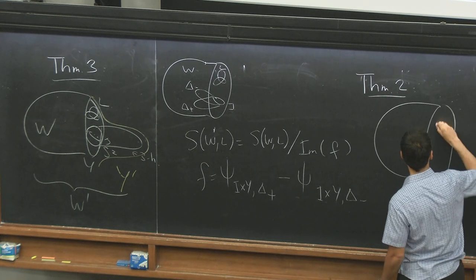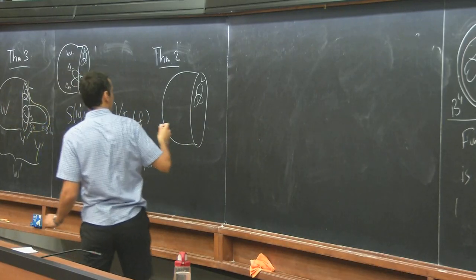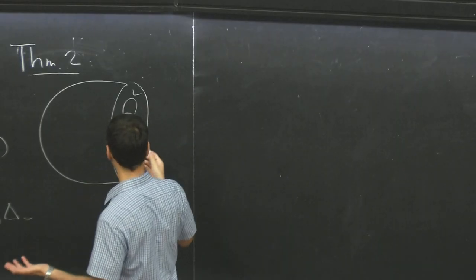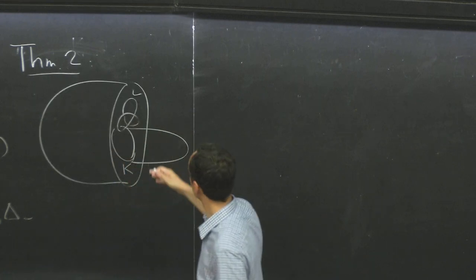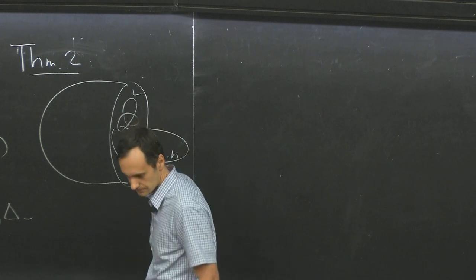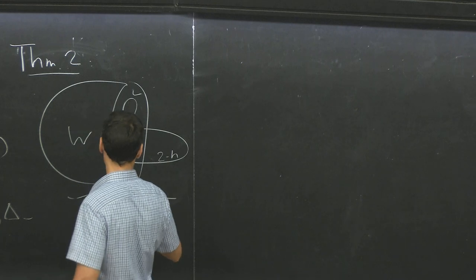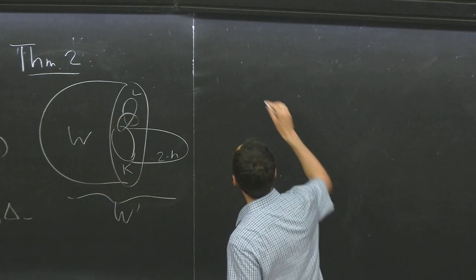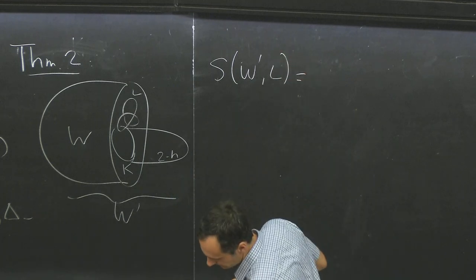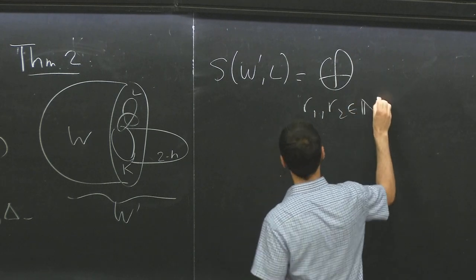Now, the two handles are the main complication in four manifolds. So this is more interesting. So again, I have a link and I have some K. Now it can, K is another link where I attach, well, let's say a knot. And it can be linked with L and I attach the two handle. So again, I go from some W to some W prime.